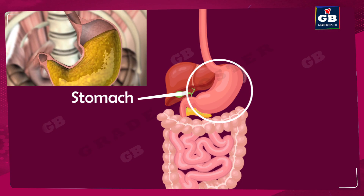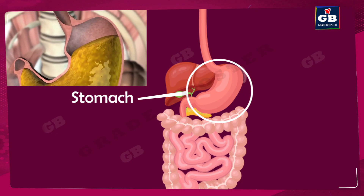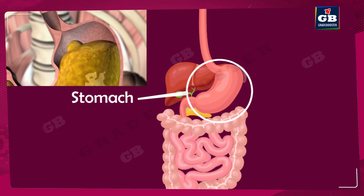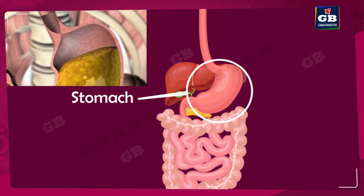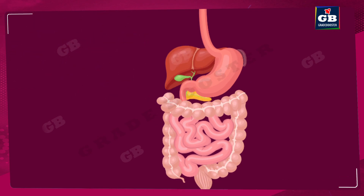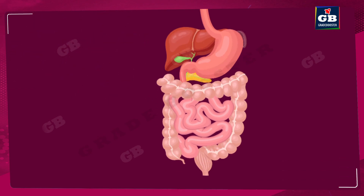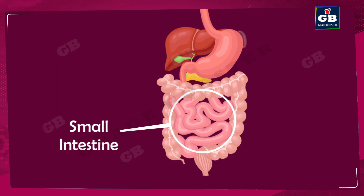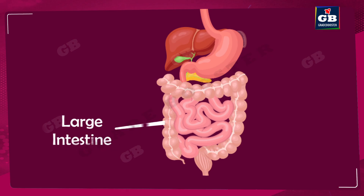The stomach is a bag-like organ in which the food is churned and made soft and partly digested. The next part is the small intestine, which is the largest part in our digestive tract. After that comes the large intestine.